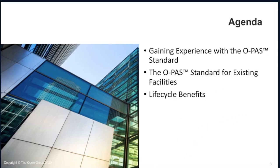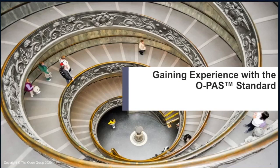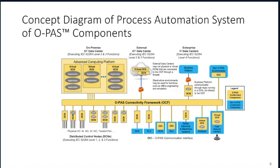Let's move on with the first part: getting started with existing facilities. As an introduction, I'll cover some of the principles addressing OPAS and go back to the scope. From the previous section, you may have seen this illustration. This diagram illustrates the different types of components or products that could be used to put together an automation system, highlighting those designed to fulfill OPAS requirements in yellow or gold, differentiating them from existing automation products not designed according to OPAS and therefore not conformant to the standard.